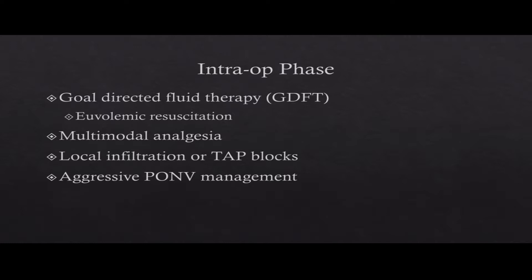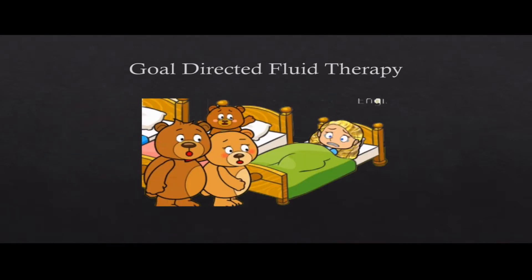Intraoperatively, let's talk about goal-directed fluid therapy, or what I call euvolemic resuscitation. It's the Goldilocks strategy — not too much, not too little. When I was in training, everybody got five liters of fluid for everything. The thinking was it helped nausea and vomiting, and that NPO patients were dried out. But just because you're NPO doesn't make you hypovolemic — your kidneys are smarter than that.